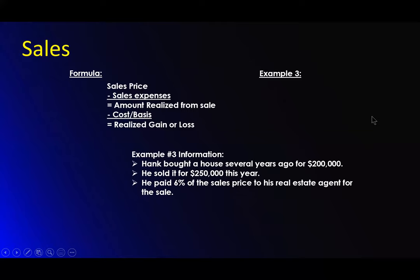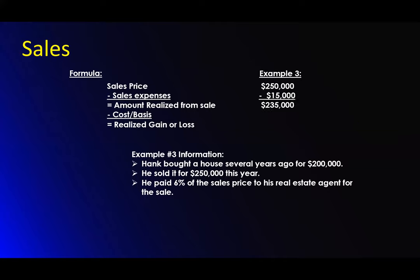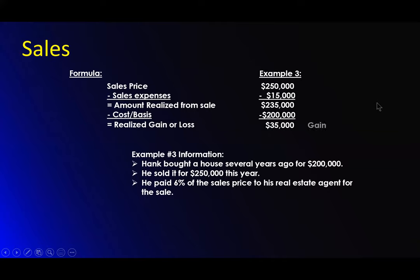Hank bought a house several years ago for $200,000. He sold it for $250,000 this year. He paid 6% of the sales price to his real estate agent for the sale. So $250,000 minus $15,000 in sales expenses — that's the 6% — he got $235,000. His cost basis is $200,000. Remember, the problem is he didn't depreciate or anything — we'll go into that in a bit here about certain rules about a rental property. But he is showing a gain of $35,000 at this point.